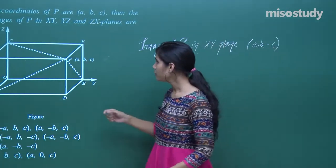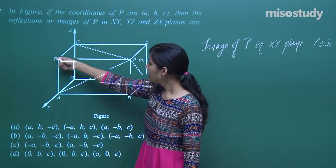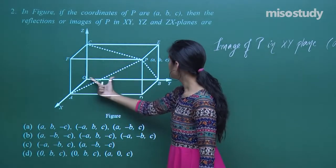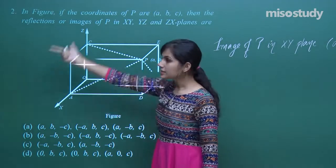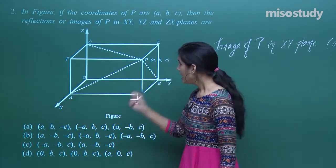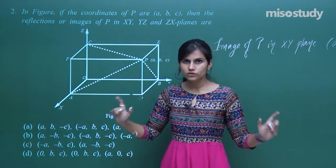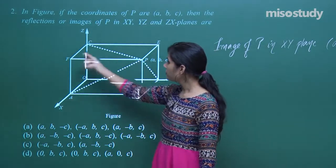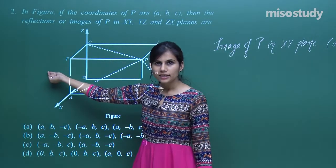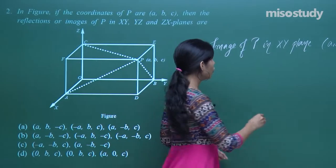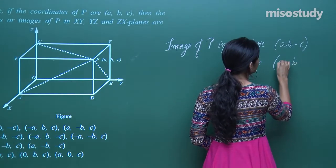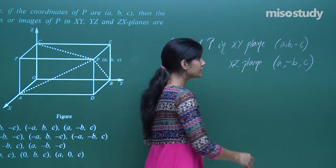For the reflection along the xz plane, the same distance covered along the y axis is covered on the other side. The x and z coordinates do not change at all. So when talking about the reflection of P along the xz plane, only b changes to minus b, and a and c remain the same, giving (a, -b, c).